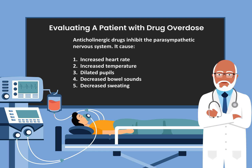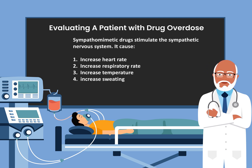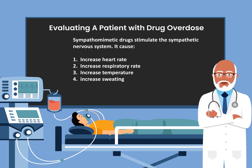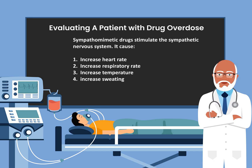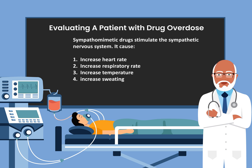Anticholinergic drugs also cause decreased sweating. There are also drugs that have what is known as sympathomimetic effects. These sympathomimetic drugs stimulate the sympathetic nervous system, and the result will be increased heart rate, increased respiratory rate, increased temperature, and increased sweating.